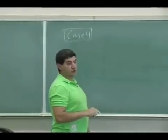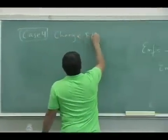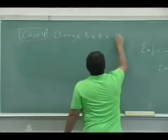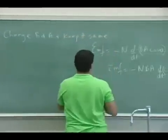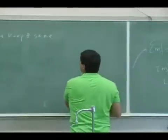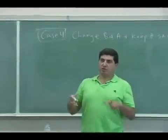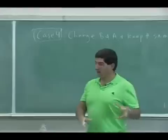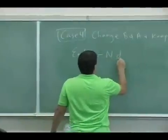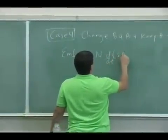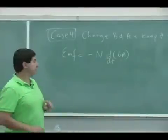You could change any two at a time, like change B and A and keep theta the same. So that would be like I could change the B as a function of time, and then I could change the area as a function of time. So it just would be like that, right? So imagine the angle is still one, and I'm changing both.